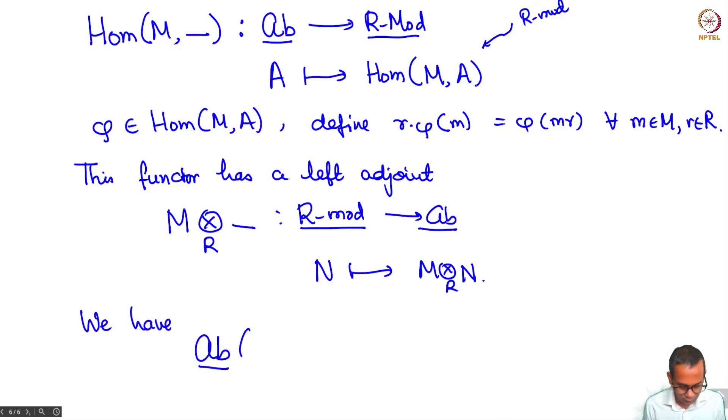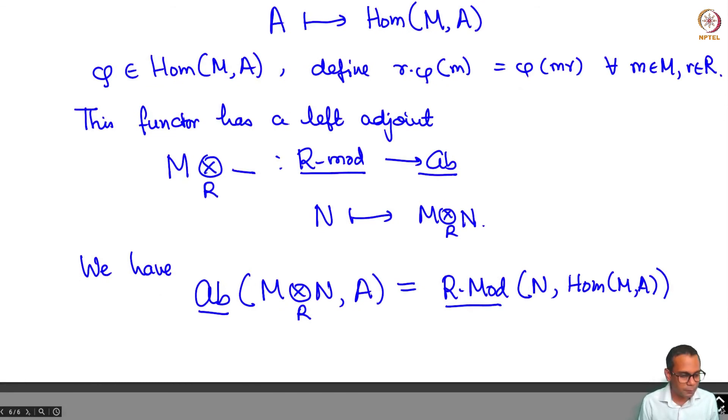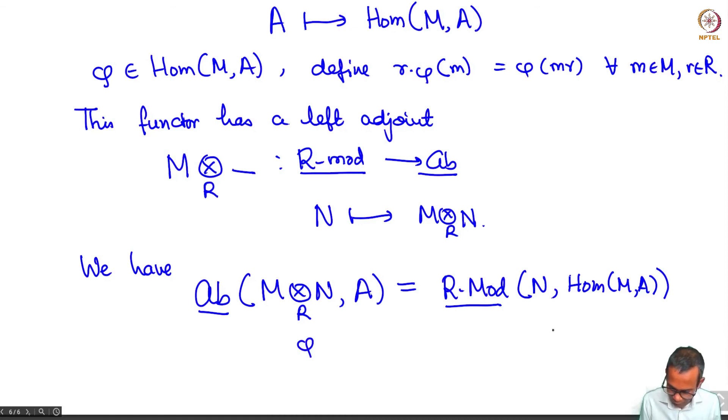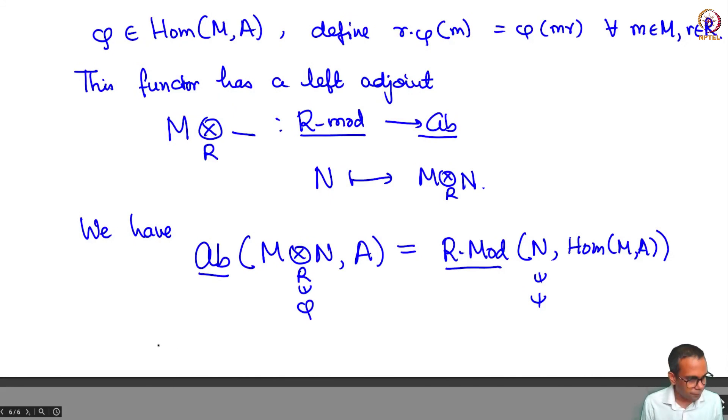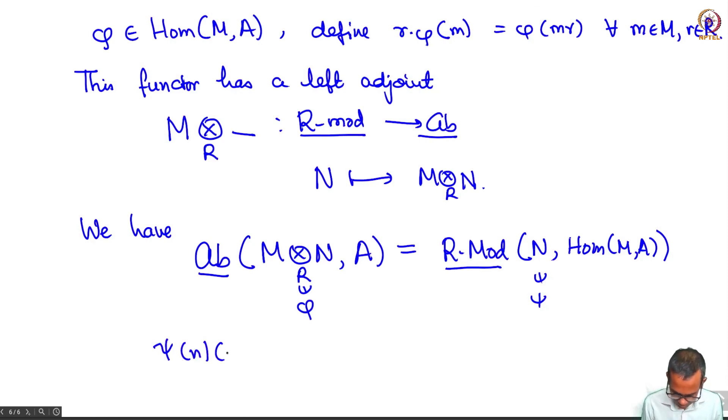This establishes that arrows in the category of abelian groups from M tensor R N to A are in bijection with the arrows in the category of R modules from N to Hom M A. And if you know a little bit about tensors, what it does here is if you have phi here, then they are related by the equation: psi of N of M, maybe I'll write psi on the right, phi of M tensor N is equal to psi of M.